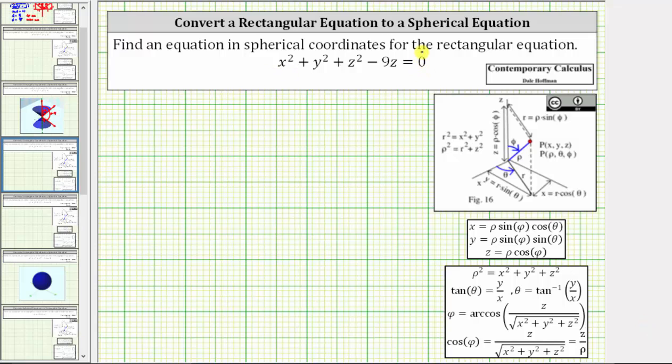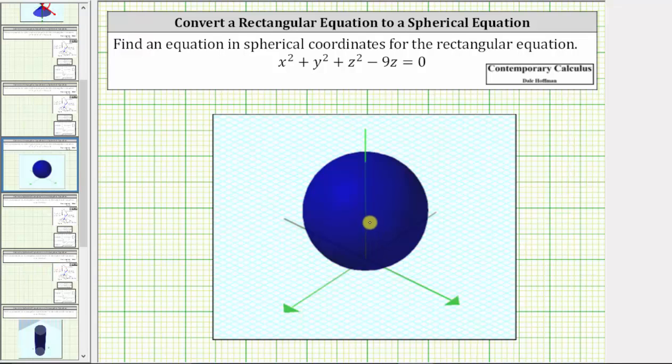Find an equation in spherical coordinates for the rectangular equation x squared plus y squared plus z squared minus nine z equals zero. If we graph this equation in three dimensions, the graph is the sphere pictured here.